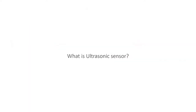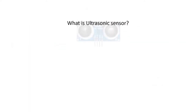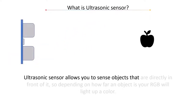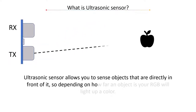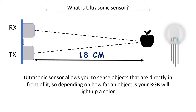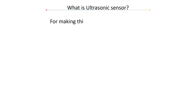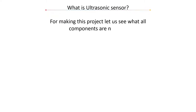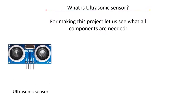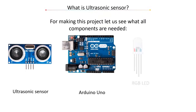An ultrasonic sensor allows you to sense objects directly in front of it. Depending on how far an object is, your RGB LED will light up a different color. The components needed for this project are: an ultrasonic sensor, Arduino Uno, RGB LED and resistors.